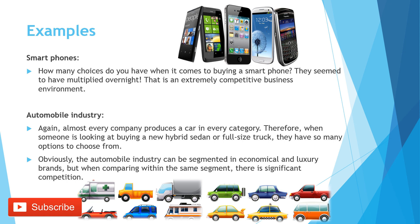Let's look at some examples. Smartphones — how many choices do you have when buying a smartphone? There are hundreds of choices and they seem to have multiplied overnight. It's an extremely competitive business environment — iPhone, Blackberry, HTC, Nokia, and all sorts of phones out there, and each has about 50 different sub-products in their range that you can select from. This market is extremely competitive.